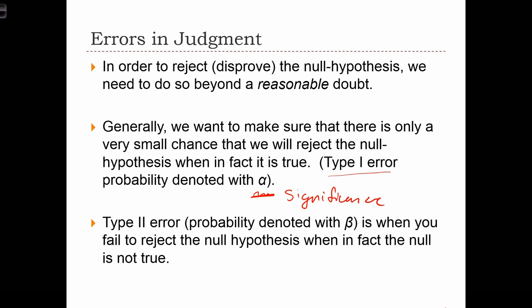On the other hand, type 2 error, denoted with beta, Greek letter for B, is when you fail to reject the null hypothesis when, in fact, the null is not true. In this case, a type 2 error occurs if, for example, in reality, the null hypothesis is not true, but we don't find enough evidence in our sample statistics to reject the null hypothesis.